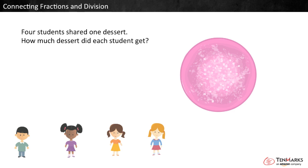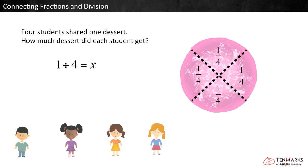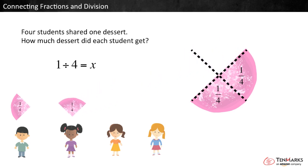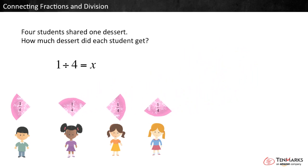A division equation that represents this problem is 1 divided by 4 equals x. We can use fraction sense and a model to see that when one object is broken into four parts, each part is 1 fourth. So each student gets 1 fourth of the dessert, and 1 divided by 4 equals 1 fourth.